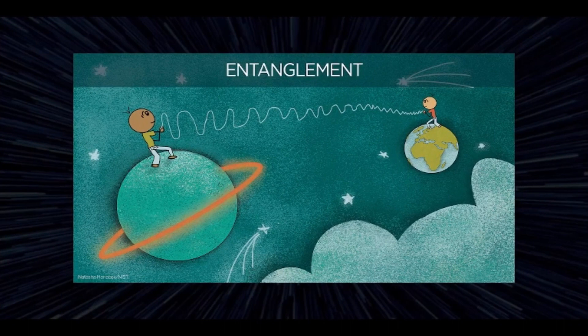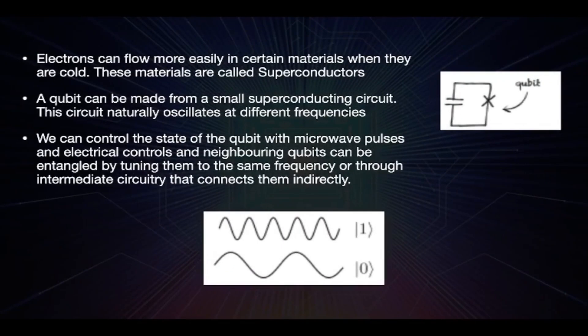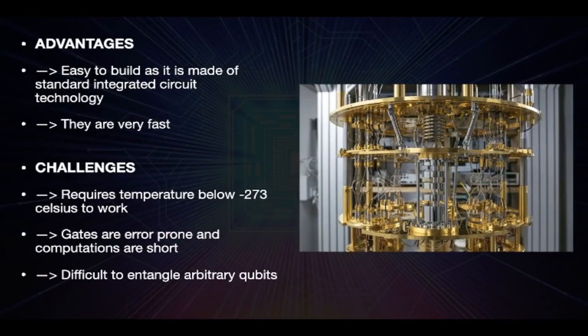Moving on to the ways of building a quantum computer — there are two known ways. The first is superconducting quantum computers, where a qubit is made up of small superconducting circuits. Superconductors are materials in which electrons flow more easily when they are cold. This circuit naturally oscillates at different frequencies, and these qubits can be controlled with microwave pulses and electrical controls. They can also be entangled by tuning them to the same frequency. They are easy to build and fast, but the difficulties are that it requires a temperature below -273 degrees Celsius, and these qubits are hard to entangle.